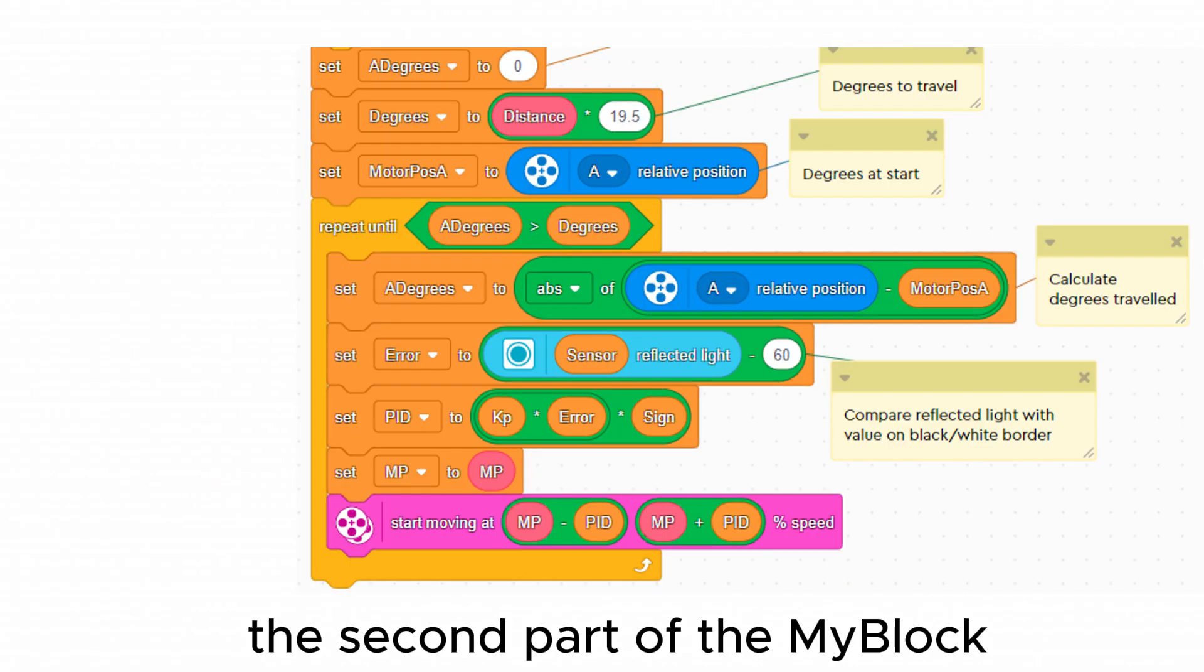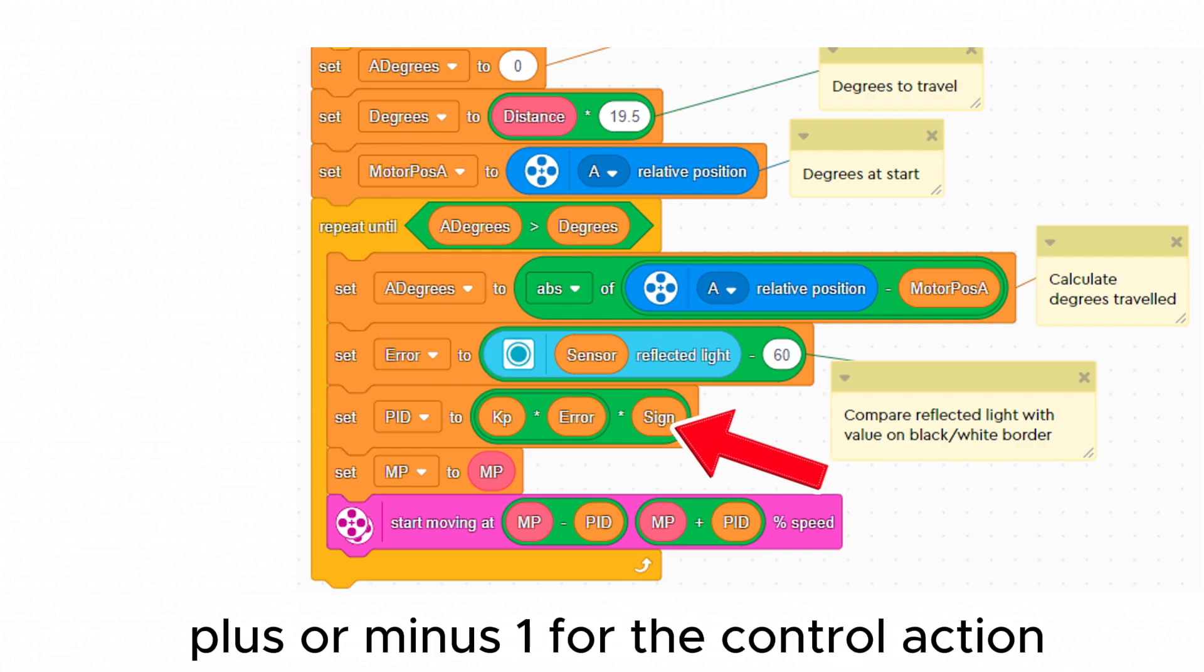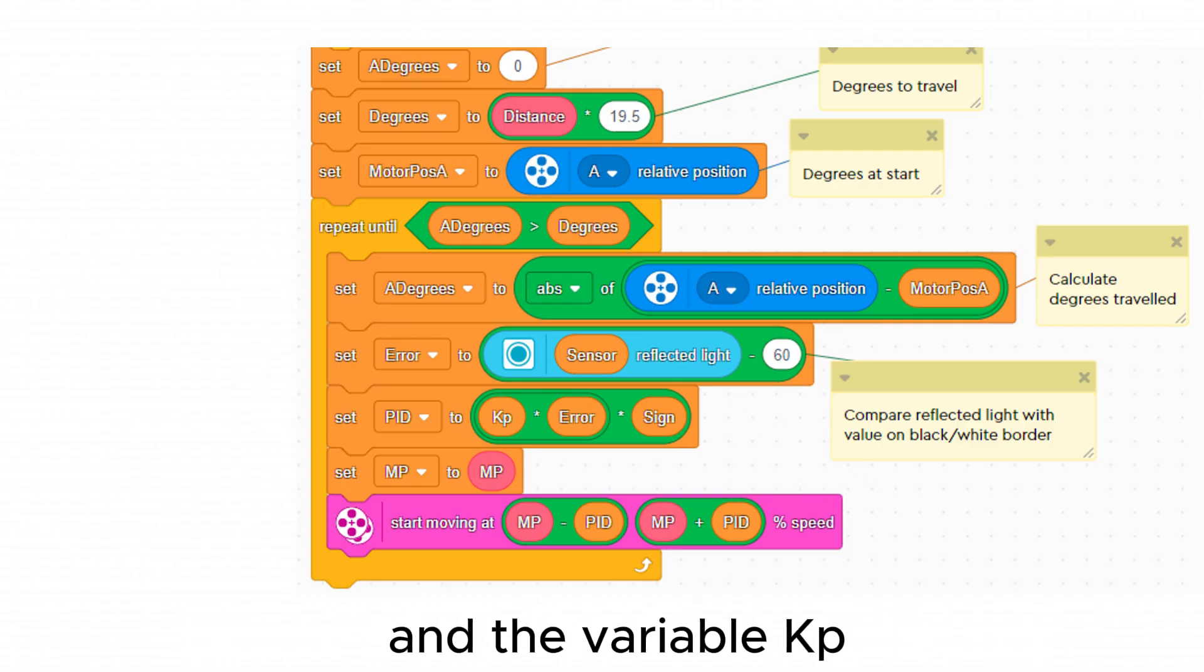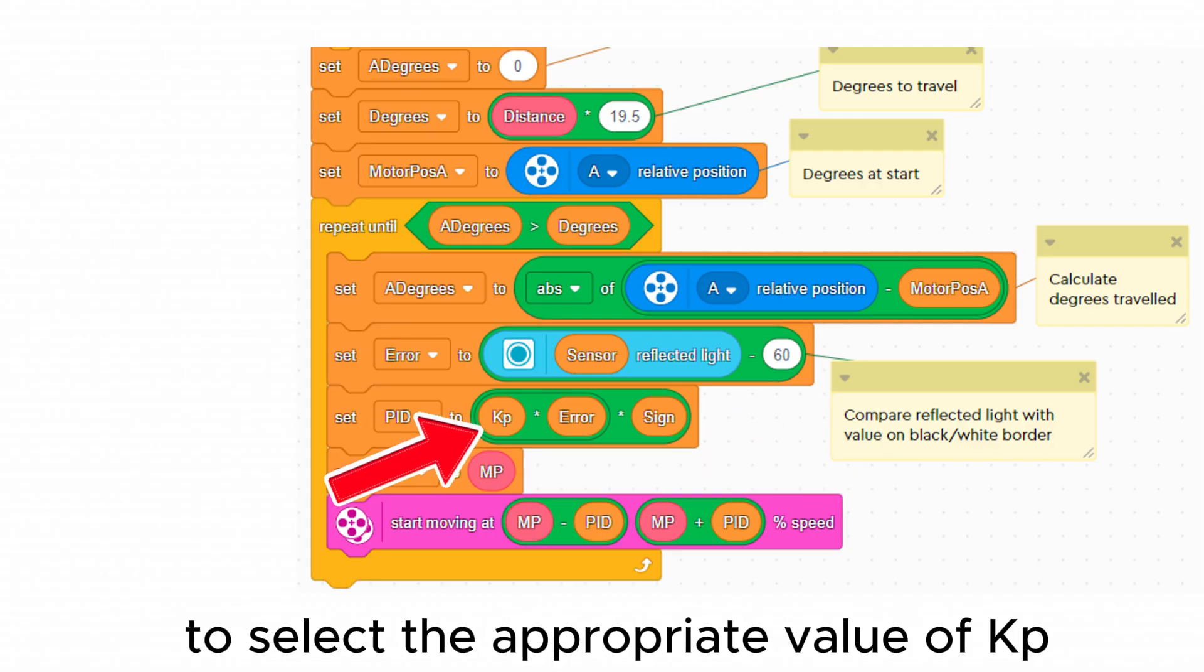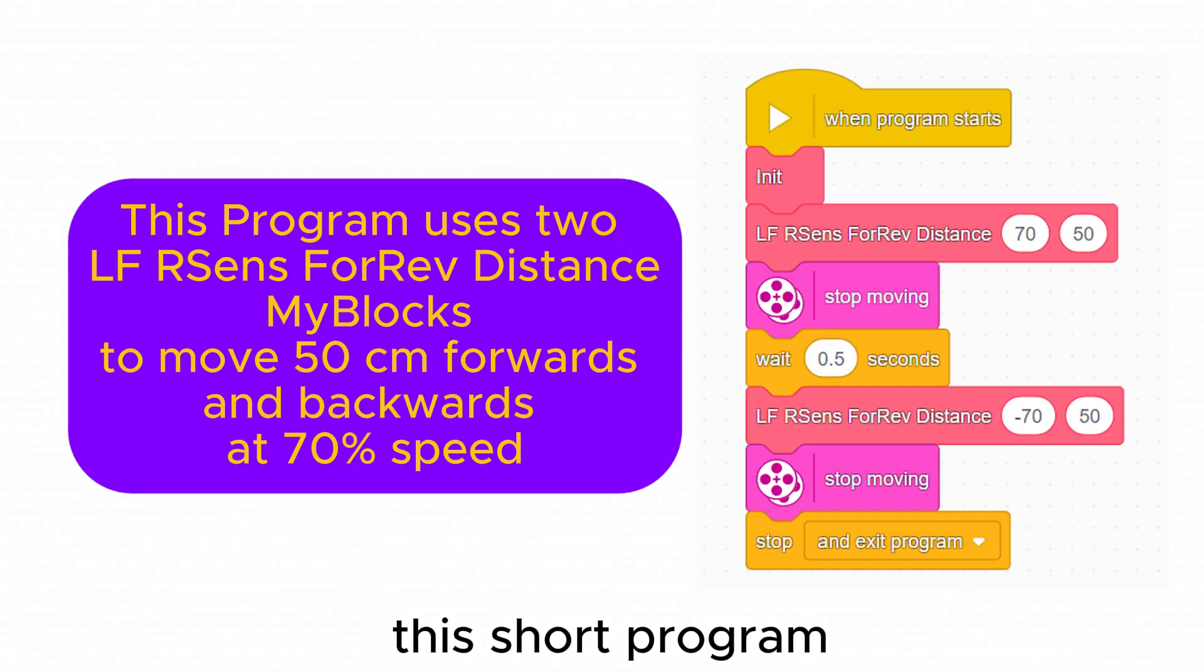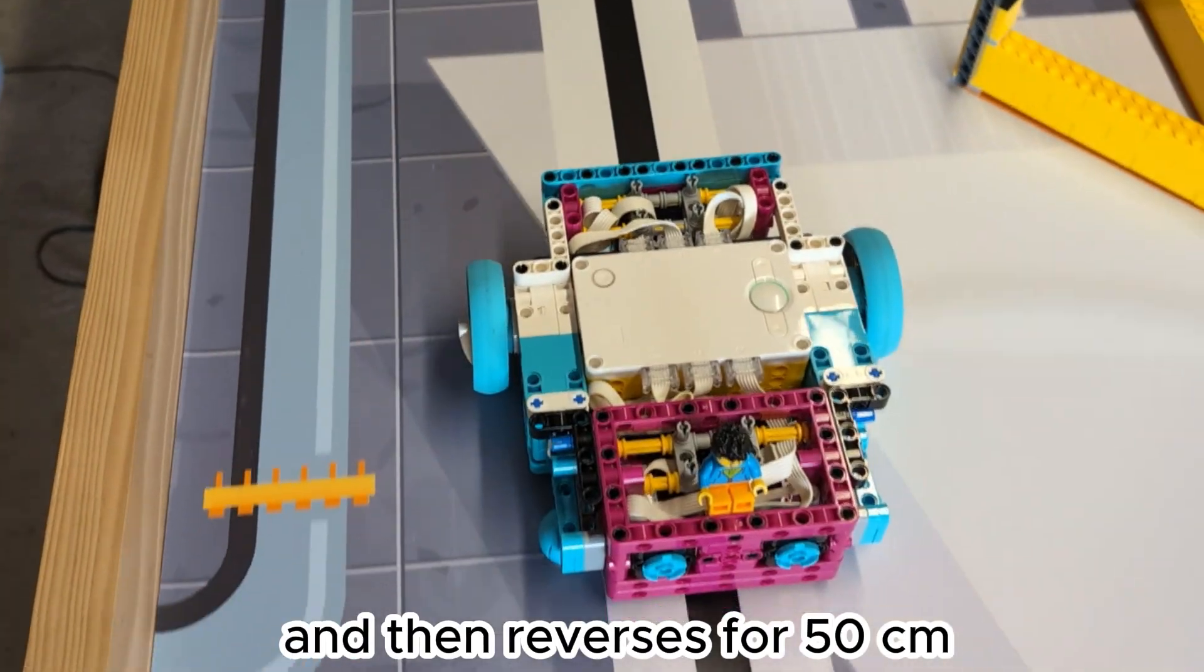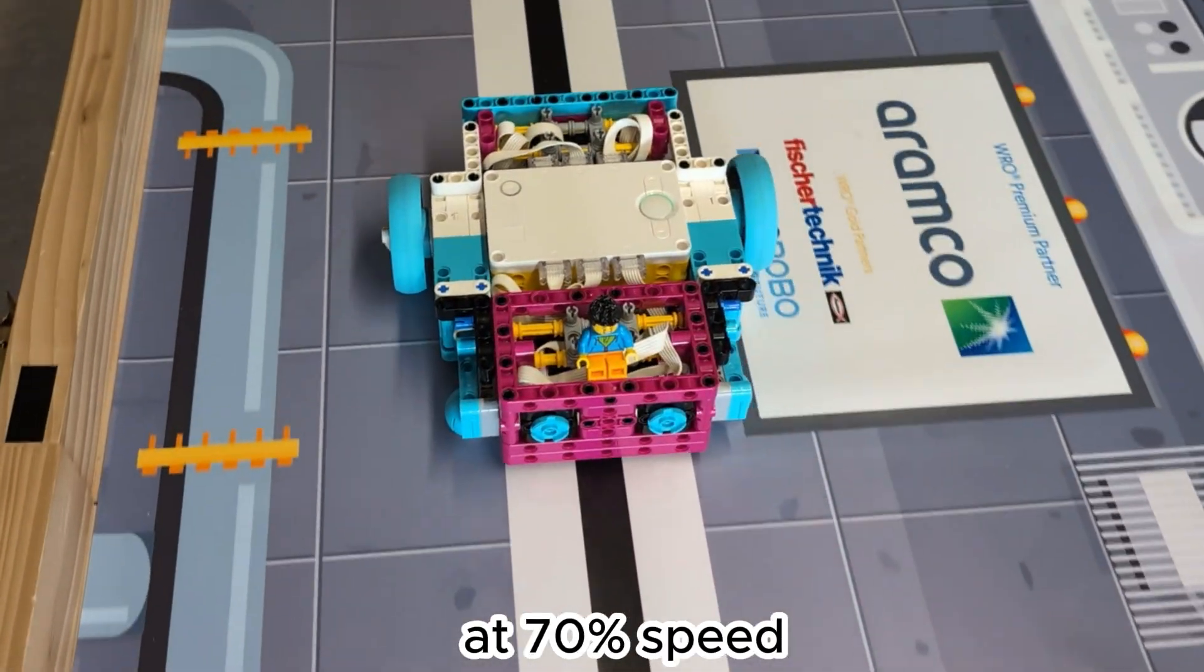The second part of the my block uses the variable sensor to choose the color sensor. It uses the variable sign plus or minus one for the control action and the variable KP to select the appropriate value of KP as defined in the init my block. This short program moves the robot forwards for 50 centimeters, waits half a second and then reverses for 50 centimeters at 70 percent speed.